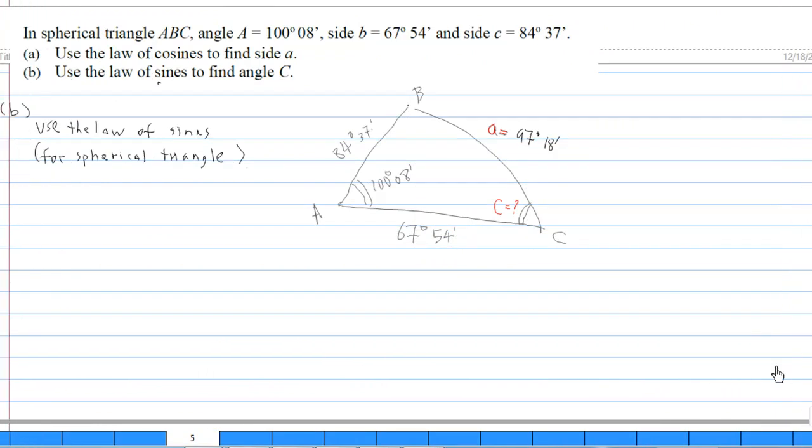For the second part, we are going to find angle C. After we have known what is side a, which is 97 degrees 18 minutes. To find angle C, there are many ways to do that, but the question says that we use the law of sines. Notice that the law of sines for spherical triangle is different from the law of sines in the normal triangle.